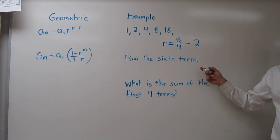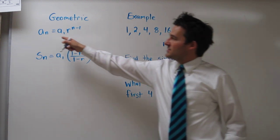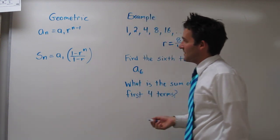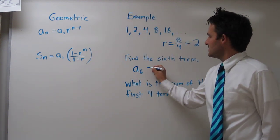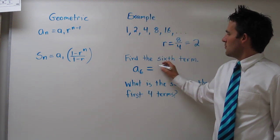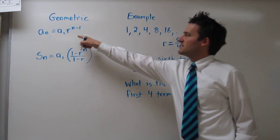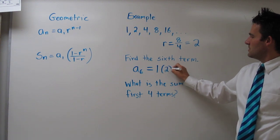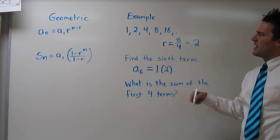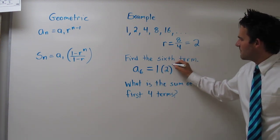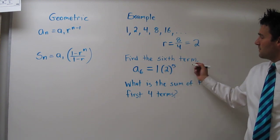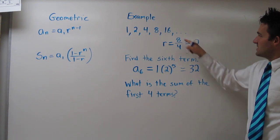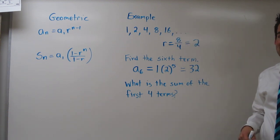So now let's find the sixth term. We can use this formula up here. a sub 6 equals the first term, which is 1, times r to the n minus 1. Well our r is 2, and our n was 6, so n minus 1 would be 5. So 2 to the fifth power is 32. The sixth term, or the term that would go right there, is 32.